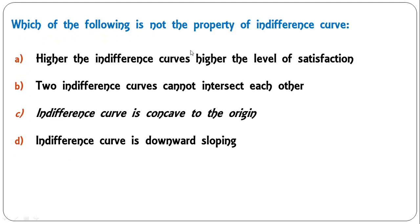Next: 'Which of the following is NOT a property of the indifference curve?' — higher IC gives higher satisfaction; two ICs cannot intersect; IC is concave to the origin; IC is downward sloping? The indifference curve is not concave — it is convex — so C is the correct answer; it is not a property of the indifference curve.